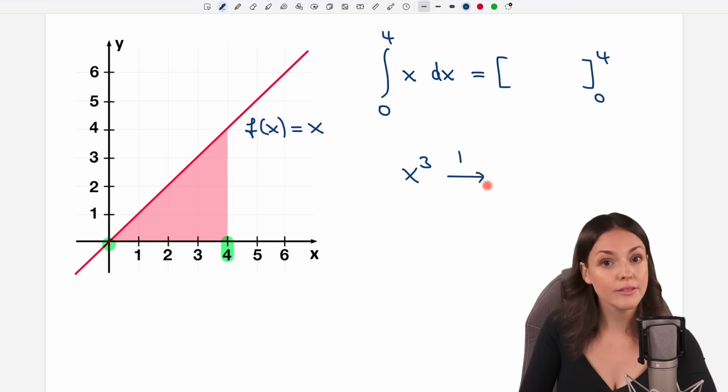You start at x to the power 3, let's say, just an example, and you want to find the derivative. Then the rule is, I take the exponent and multiply it by x to the power of, and then you decrease your exponent by 1 and make it a 2. This is the derivative.